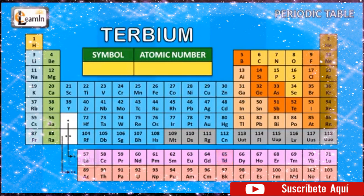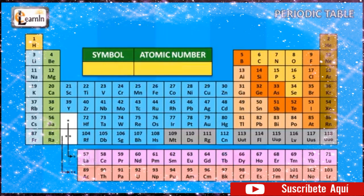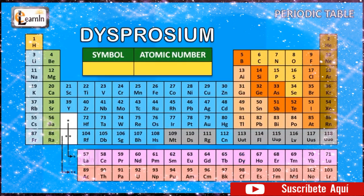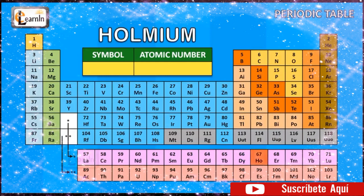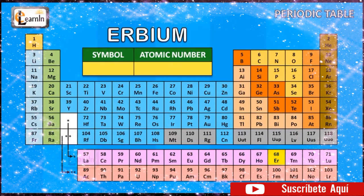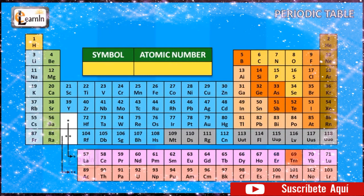The element terbium is represented as Tb and has an atomic number of 65. The element dysprosium is represented as Dy and has an atomic number of 66. The element holmium is represented as Ho and has an atomic number of 67. The element erbium is represented as Er and has an atomic number of 68. The element thulium is represented as Tm and has an atomic number of 69.